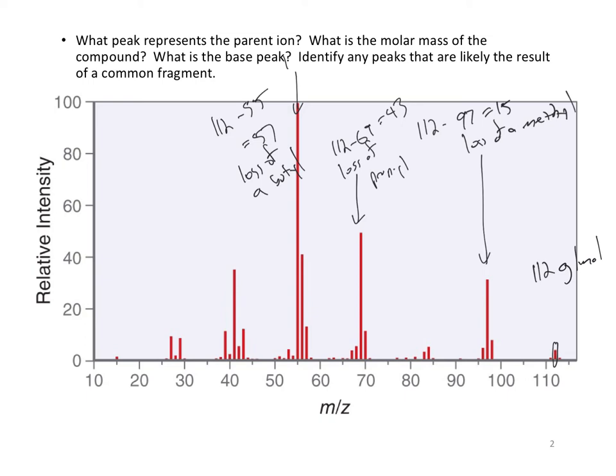And I could go even further. This isn't actually on your list of common fragments, but when I do 112 minus 41, I'm going to get 71. That's probably the loss of a pentyl group.